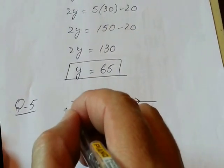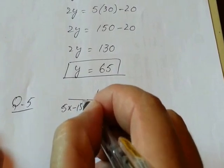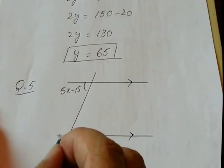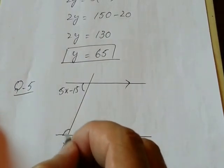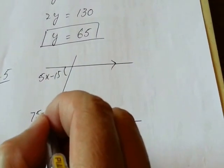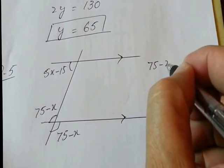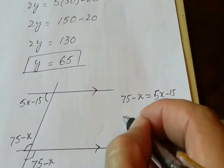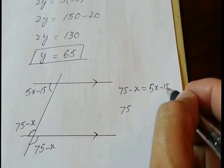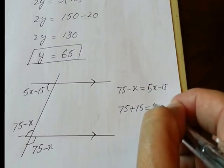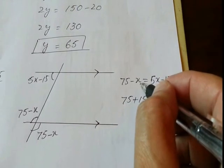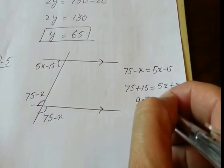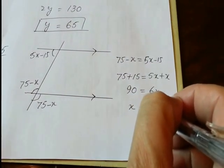Question 5: One angle is 5x minus 15 and the angle at this point is 75 minus x. Using the vertically opposite angles property, the angle here is also 75 minus x. So 75 − x = 5x − 15. Shifting terms: 75 + 15 = 6x, giving 90 = 6x, therefore x = 15.